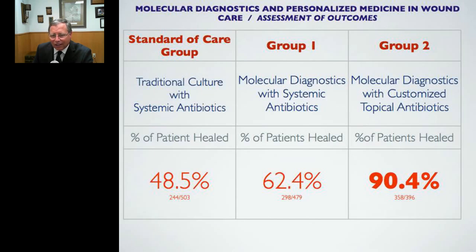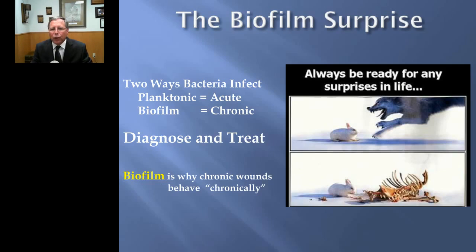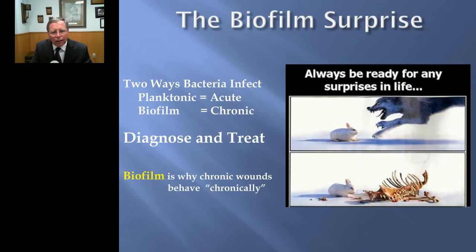If you treat with standard of care — the trial and error approach — you heal about 50% of wounds in six months. With molecular diagnostics and customized topical antibiotics, you heal about 90% of wounds in six months. That makes sense: if biofilm is an important barrier, then suppressing it should allow healing. There are two ways bacteria infect: planktonic bacteria cause acute infections; biofilm phenotype bacteria cause chronic infections. Biofilm is why chronic wounds behave chronically — the duration, the non-healing, the exudate. That's the biofilm surprise. Thank you.